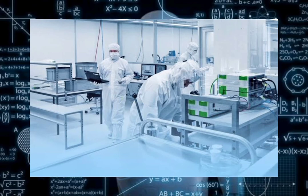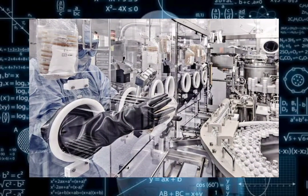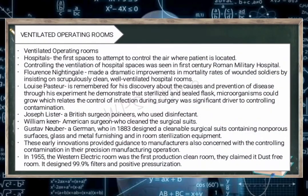The control of infection during surgery was a significant driver to controlling contamination. Joseph Lister, a British surgeon, pioneered the use of disinfectants. William Kane, an American surgeon, cleaned the surgical suites. And Gustav Neuber, a German who in 1883 designed a cleanable surgical suite containing non-porous surfaces, glass and metal furnishings, and in-room sterilization equipment. This early innovation provided guidance to manufacturers also concerned with controlling contamination in their precision manufacturing operations.